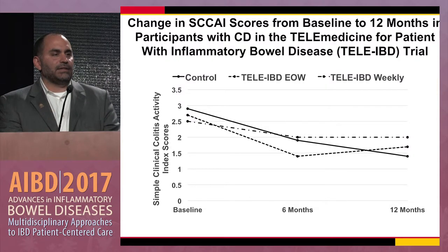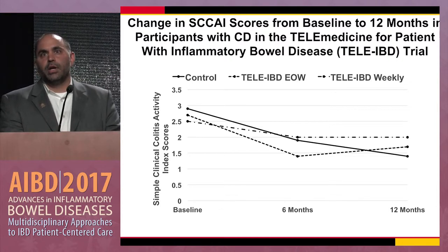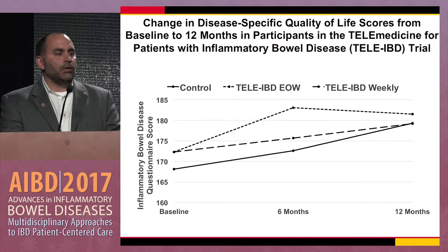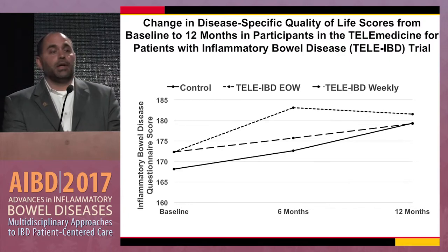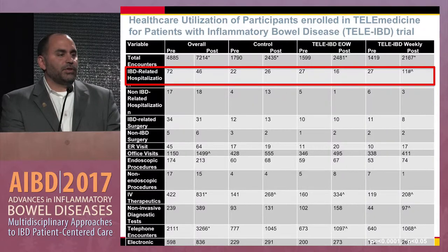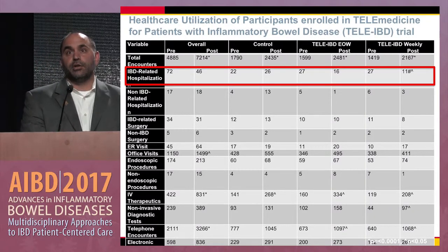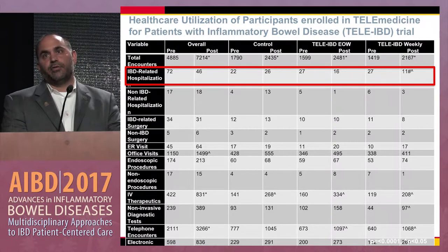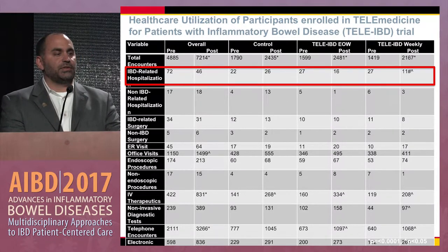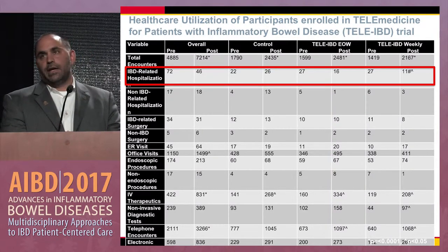Similarly, looking at SCCAI scores in ulcerative colitis, all patients improved, but there was no difference in the telemedicine group. Quality of life went up in all three arms, with no significant difference between groups. We also looked at healthcare utilization extracted from electronic records at the three sites, and there are three main take-home messages. The first is that total healthcare encounters increased significantly from baseline in all three groups.